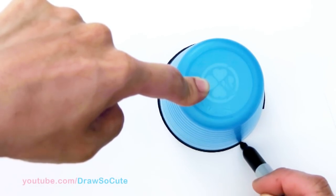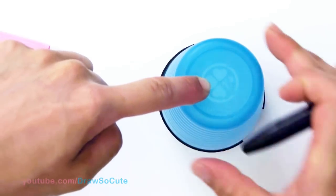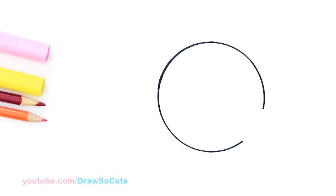So whatever you have at home that's a nice circle will work. So I'm just leaving a little gap in this area right here for the tongue. So there I got my circle in.